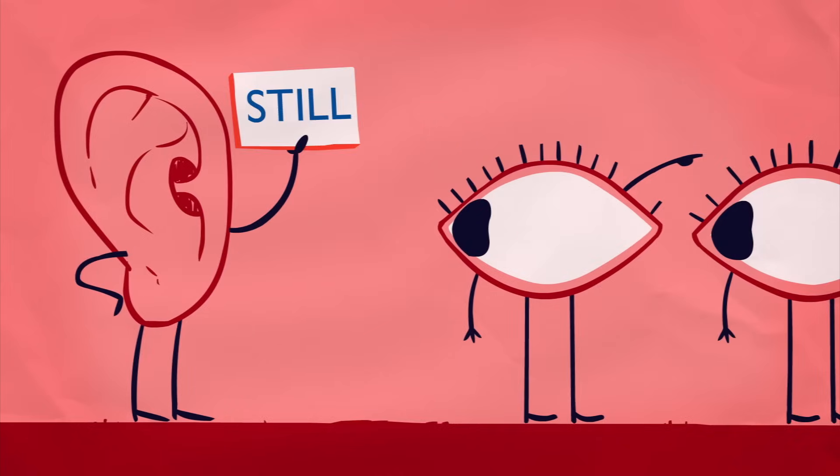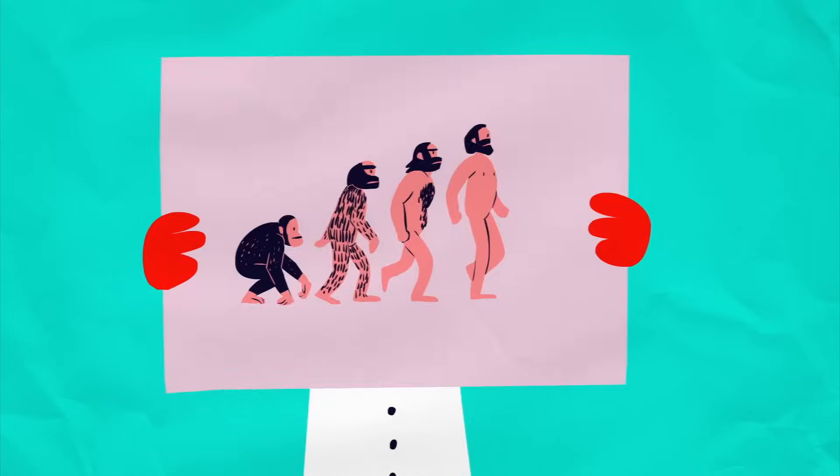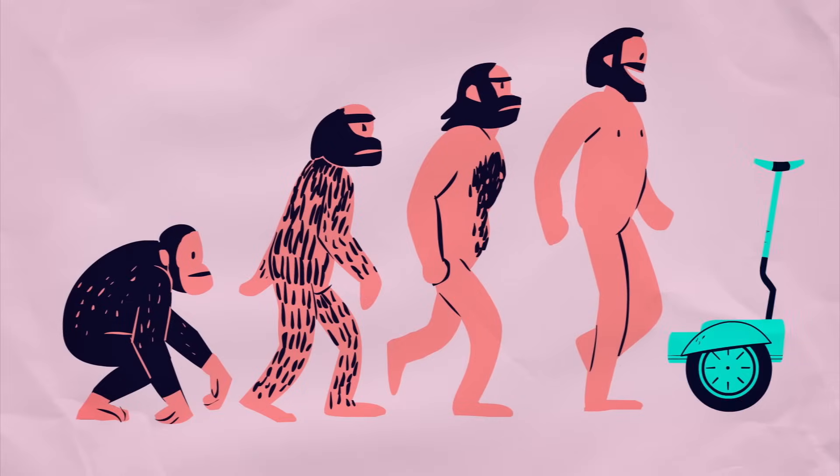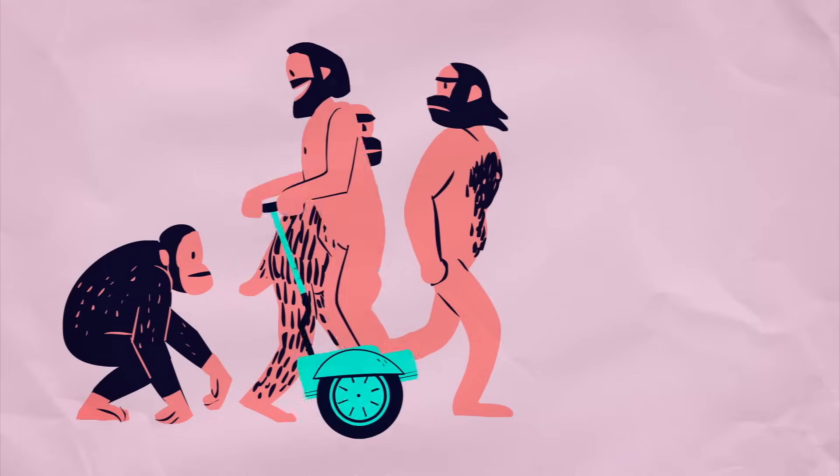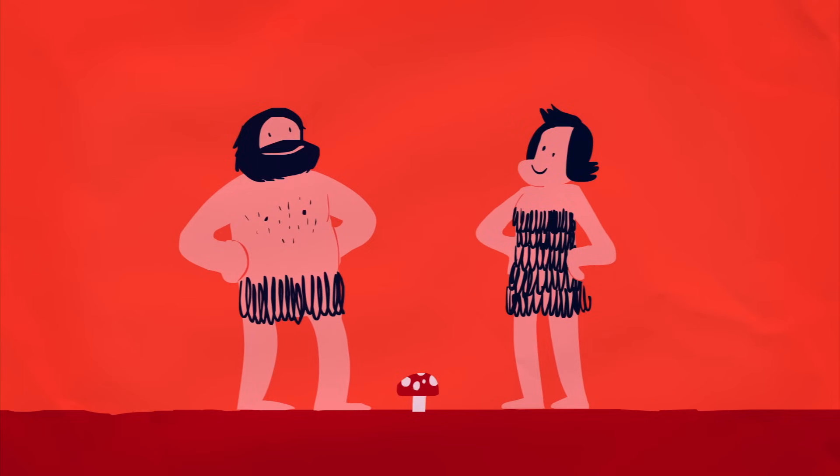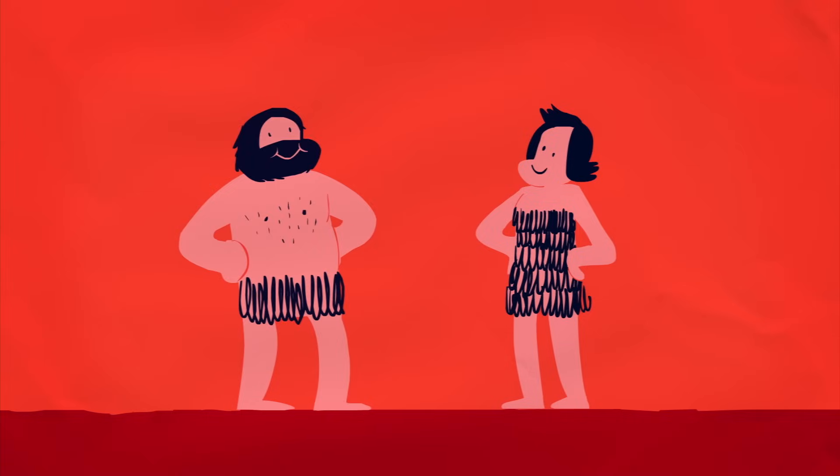But why does this conflicting information have to make us feel so terrible? Scientists aren't sure about that either, but they think that there's an evolutionary explanation. You see, both fast-moving vehicles and video recordings have only existed in the last couple of centuries, barely a blink in evolutionary time. For most of our history, there just wasn't that much that could cause this kind of sensory mix-up. Except for poisons.